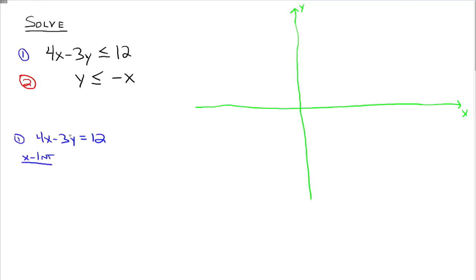So the x-intercept. Remember, we'll let y be 0. So if y is 0, you have 4x equals 12. So x equals 3. So that's the ordered pair 3, 0. And the y-intercept. This time we'll let x be 0. So when x is 0, y is 12 divided by negative 3. So that gives you negative 4. So you can go plot 3, 0 and 0, negative 4.